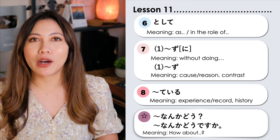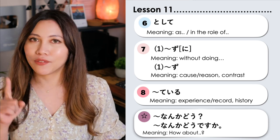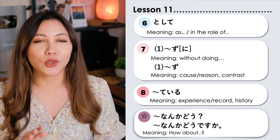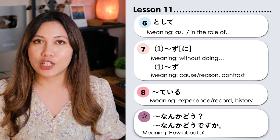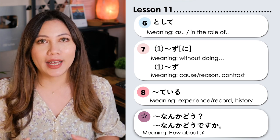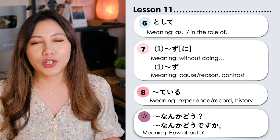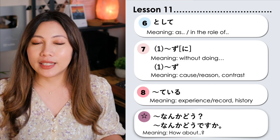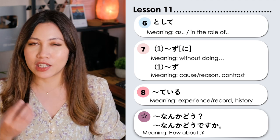In this video, we will learn about the following grammar points. First, we will learn about nani-nani toshite. We will also learn about nani-nani zu ni or nani-nani zu. And we will also learn nani-nani te iru to indicate one's experience and so on. Hai, junbi dekitara? Hajime masyo!